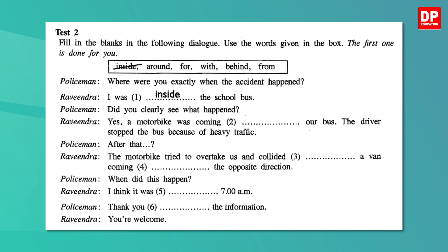Let's read the completed dialogue. It's a dialogue between a policeman and Ravindra. 'Where were you exactly when the accident happened?' 'I was inside the school bus.' 'Did you clearly see what happened?' 'Yes, a motorbike was coming behind our bus. The driver stopped the bus because of heavy traffic. After that, the motorbike tried to overtake us and collided with a van coming from the opposite direction.' 'When did this happen?' 'I think it was around 7 a.m.' 'Thank you for the information.' 'You're welcome.' I hope you got all the answers correct.